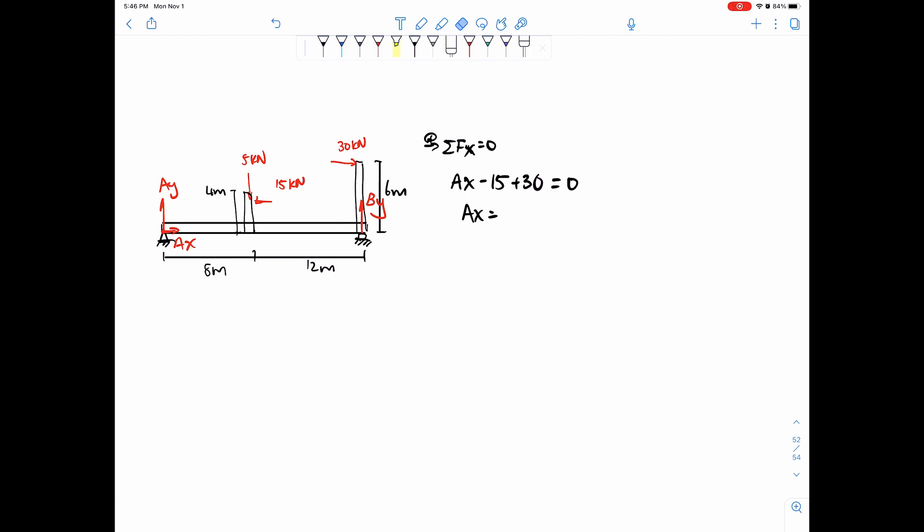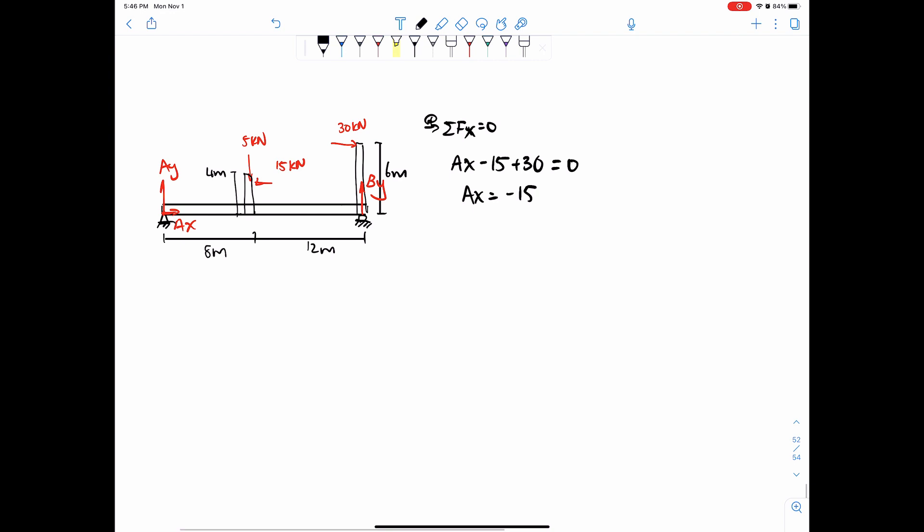And then there's no horizontal reaction at By, so we can equal that to zero, and then Ax equals negative 15. Oh, that was a brain fart there. Which means that Ax is actually going this way, but we'll fix that later.